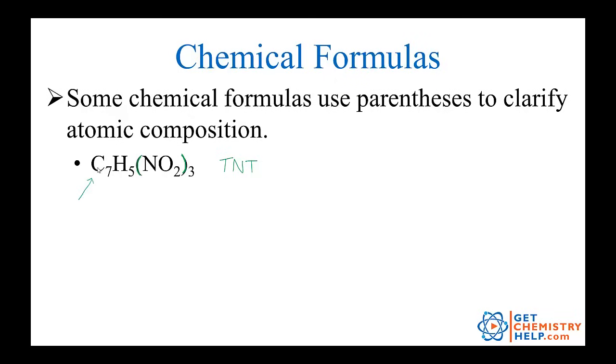So in our case, how many carbons do we have? We have seven carbons, we have five hydrogens. Then we have these NO2 groups, we have three. Well, how many nitrogens are there? We multiply by three whatever is inside, so we have three nitrogens. How many oxygens are there? Well, again, we multiply by three, so two times three, there must be six oxygens. So there you go. TNT has seven carbons, five hydrogens, three nitrogens, and six oxygens.